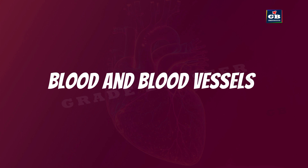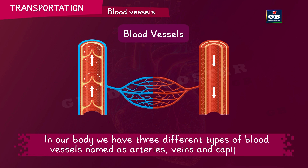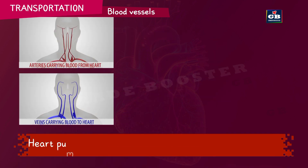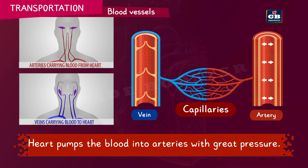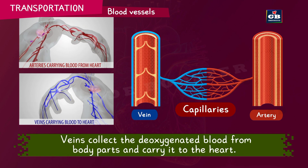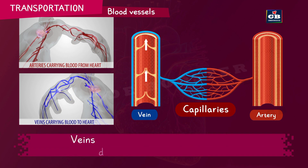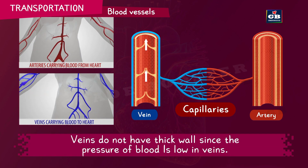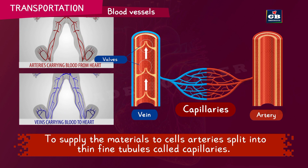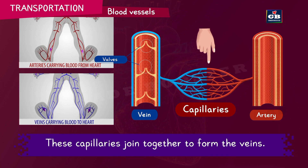Now we will study blood and blood vessels. In our bodies we have three different types of blood vessels: arteries, veins and capillaries. Arteries carry oxygenated blood from the heart to different parts of the body. The heart pumps blood into arteries with great pressure, so arteries have thick and elastic walls to resist this pressure. Veins collect deoxygenated blood from body parts and carry it to the heart. Veins do not have thick walls since blood pressure is low in veins, but veins do have valves so that blood flows in only one direction. To supply materials to cells, arteries split into thin fine tubules called capillaries, whose other ends join together to form veins.